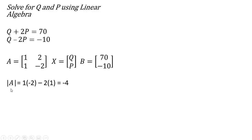So the first thing we're going to do, you saw in the formula, we need to get the determinant of A. So the determinant of A is going to be 1 multiplied by negative 2 minus 2 times 1, and that is just negative 4.